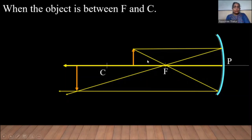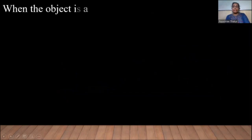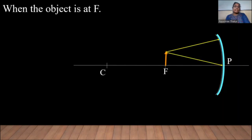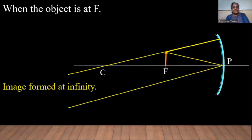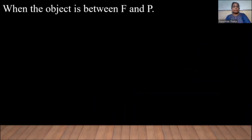Now, at F — when the object is placed at F — the image is formed at infinity, and also the image will be enlarged. Now, when the object is placed between F and P, something interesting happens.